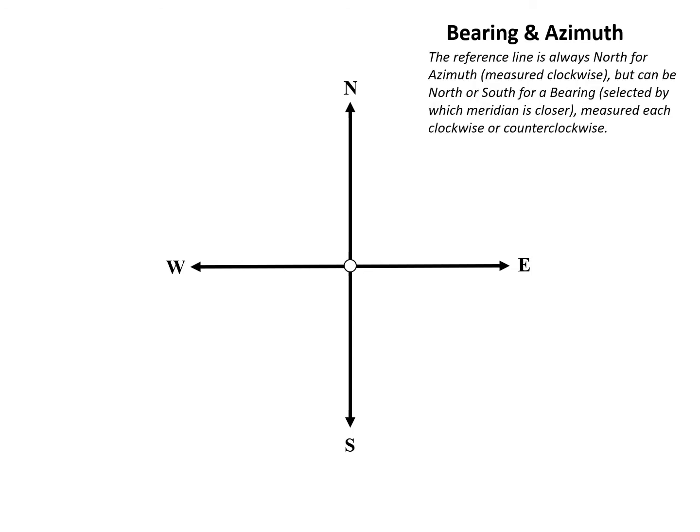The reference line is always north for the azimuth, measured clockwise, but can be north or south for a bearing. That should be selected based on which meridian is closer, and it's measured either clockwise or counterclockwise to give you the direction of turn either west or east.